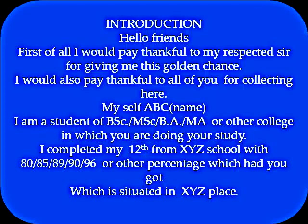Myself ABC — write your name, whatever your name is. For example, myself Sura Sharma, and I am a student of BSc first year, second year, third year, or MSc first year, second year, or BA, MA, or any other course in which you are doing your study. I completed my 12th from XYZ school — write the name of your school.